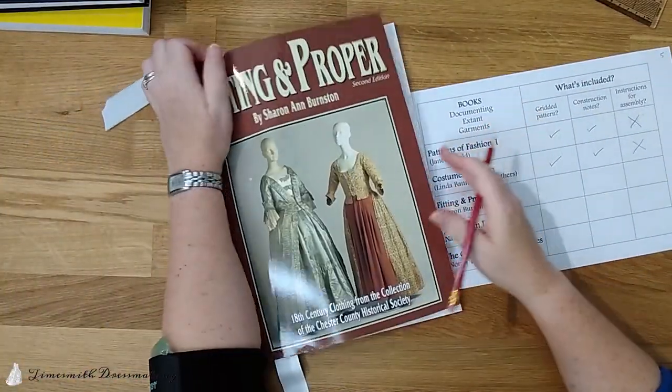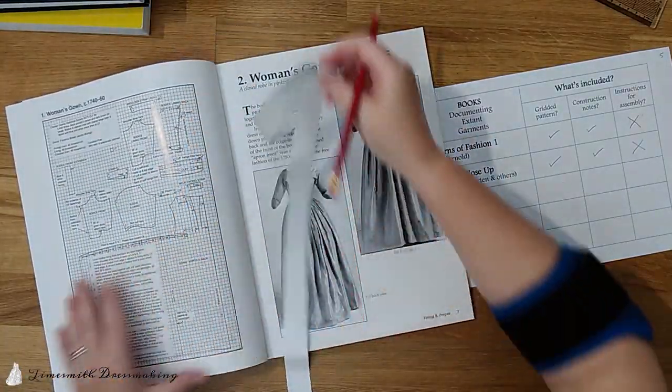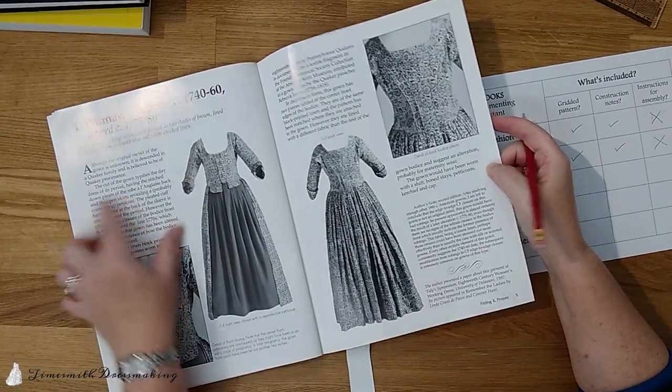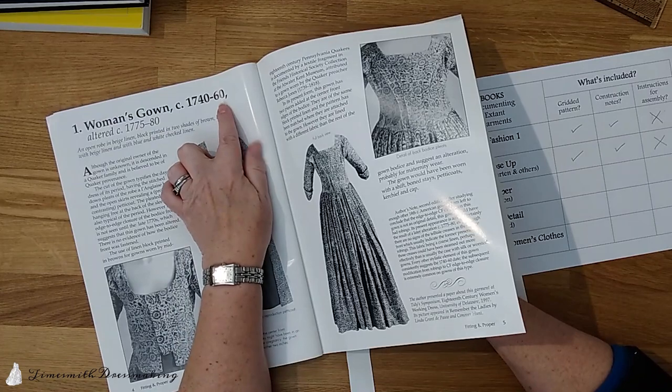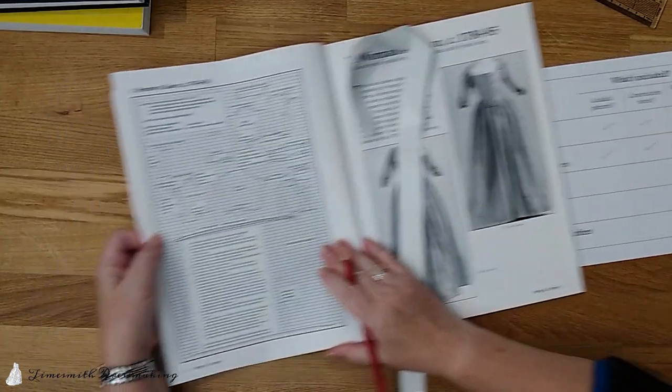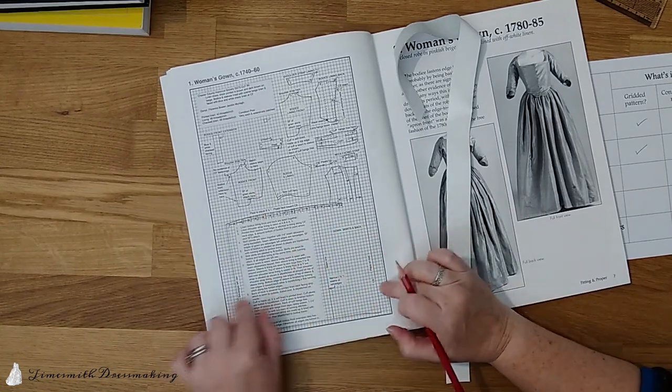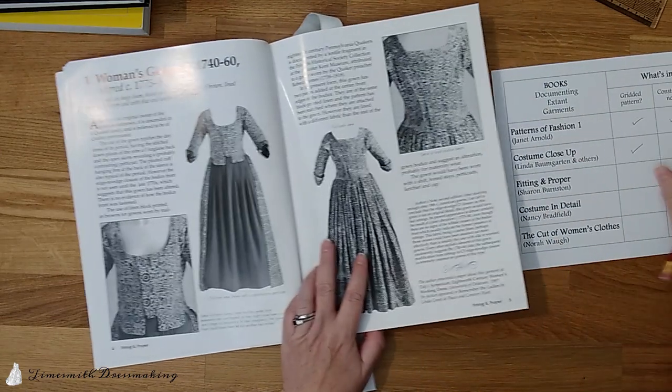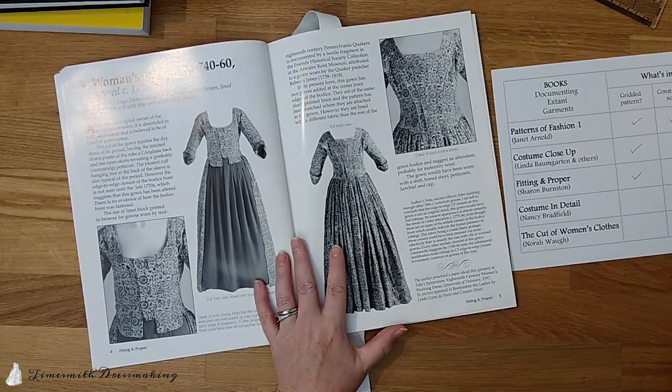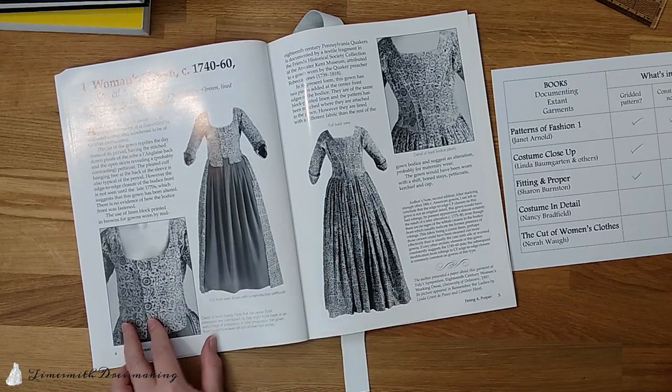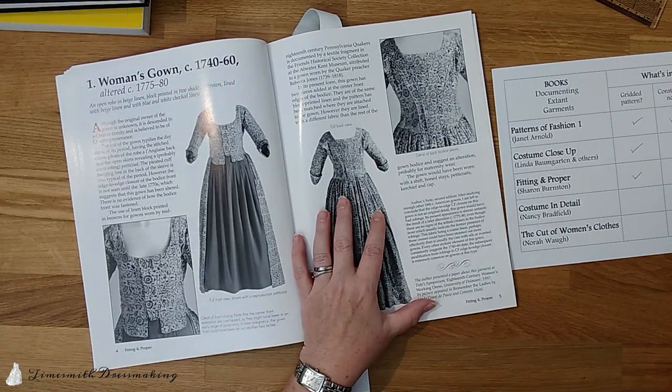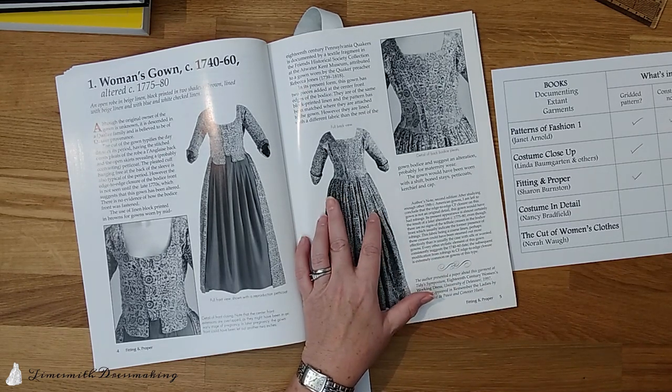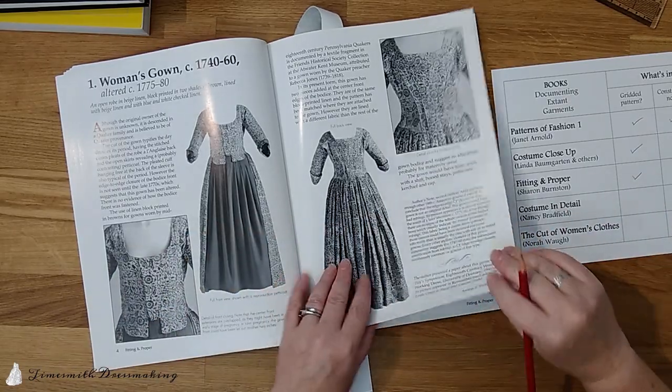Next, fitting and proper. And the gown I'm looking at here is actually this gown. We have a couple of pages of description, gown maidens dated to 1740 to 16 and then later altered. So you have a page showing a gridded pattern. This is on a grid. You can see what you've got there. Three pages on that gown. And we have a gridded pattern, construction notes, talking about the features that are noted and how they've been done, but not step by step in order instructions for assembly. Begin to see a pattern here.